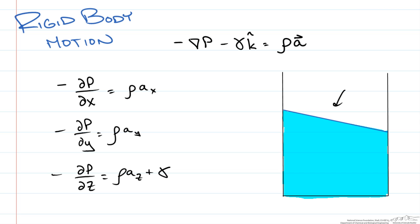Let me draw a coordinate system for our fluid. We will say that this is the z direction, this is the y direction, and that end of the page is our x direction. We are moving this container in the y direction and it is affecting our slope of our fluid. So it is having an effect in both the y and the z direction, but not having an effect in the x direction.